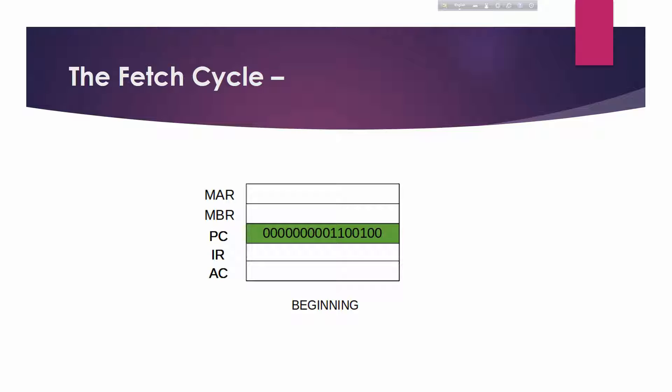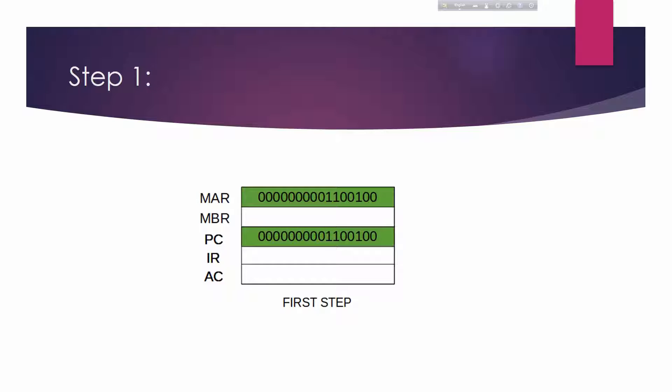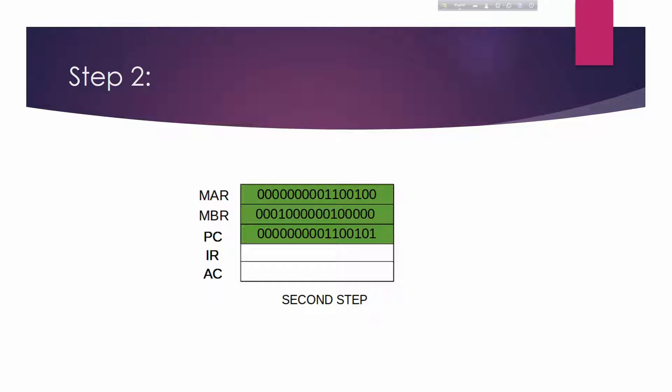The flowchart of the instruction cycle describes the complete sequence of micro-operations depending only on the instruction sequence and the interrupt. This is a simplified example. The operation of the processor is described as the performance of a sequence of micro-operations. For the fetch cycle, at the beginning the address of the next instruction to be executed is in the program counter. In step one, the address in the program counter is moved to the Memory Address Register (MAR), which is connected to the address lines of the system bus.